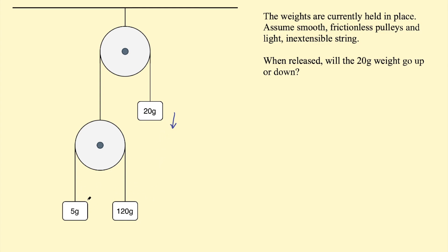Because these weights would be moving fairly quickly, right? Because 120 grams is much heavier than 5 grams, it's going to pretty much shoot straight down. And this weight won't have much time to move down, but initially it would go down.